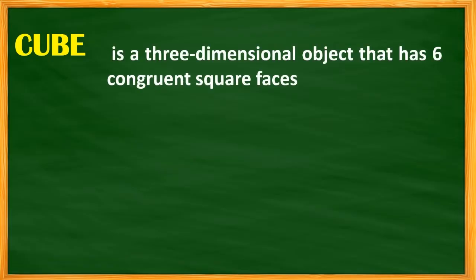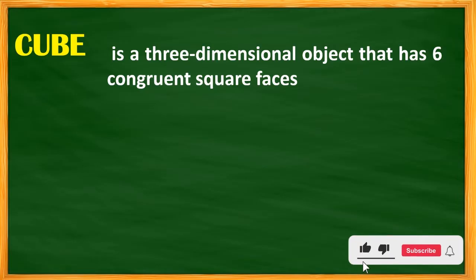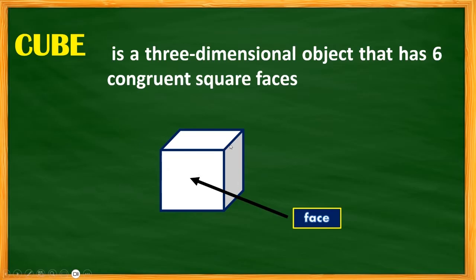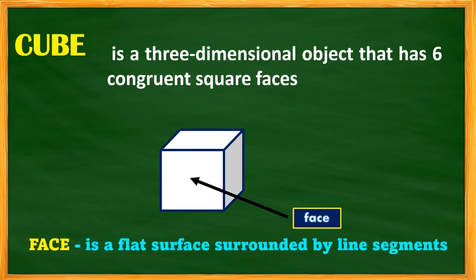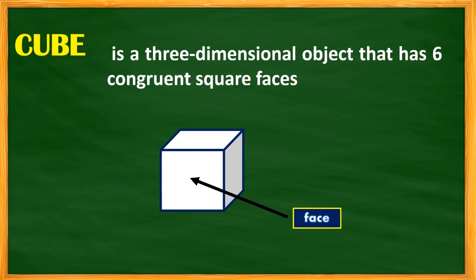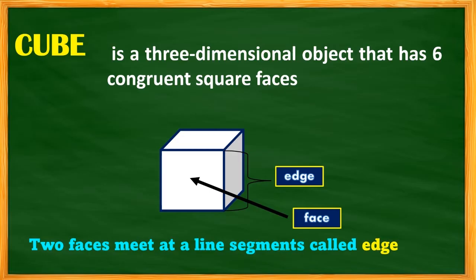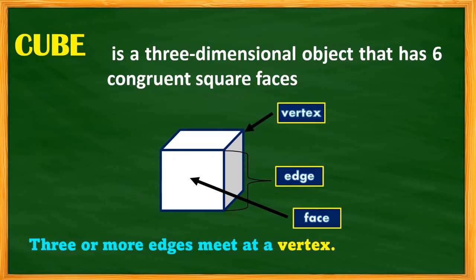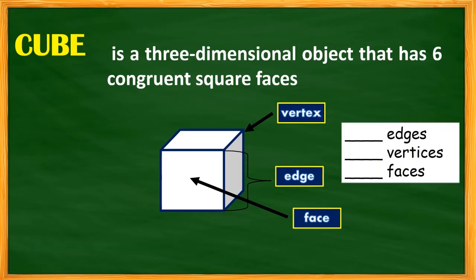A cube is a three-dimensional figure that has six congruent square faces. Here is the illustration of the cube. Each flat surface is called a face, and altogether the cube has six faces. An edge is where two faces meet at a line segment. A vertex is where three or more edges meet at a common point.